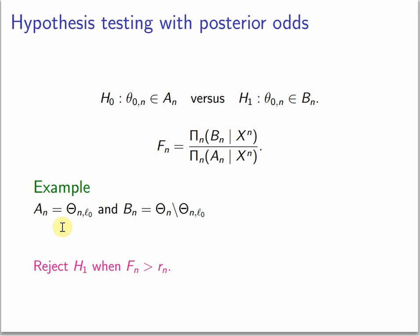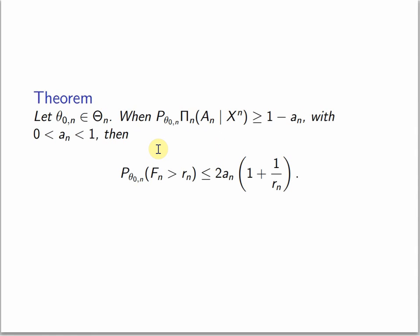We reject H0 when fn is bigger than rn. And we have bounds for that as well. When the posterior concentrates in An on average, then we have these bounds.